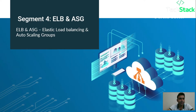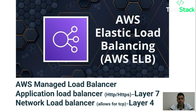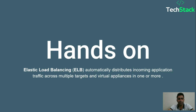The last section is ELB and ASGs. ELB is Elastic Load Balancing and ASGs are Autoscaling Groups. Elastic Load Balancing is managed by AWS. There are two types most commonly used: Application Load Balancing for HTTP and HTTPS protocols at layer 7, and Network Load Balancer for layer 4.